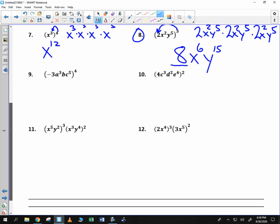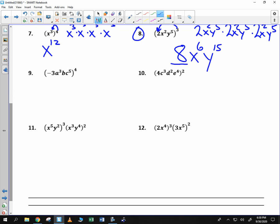So let's try to do this one without writing it all out. Negative 3 to the fourth, negative 3 times negative 3 is 9, times negative 3 again is negative 27, and times negative 3 again is 81. And we can multiply our exponents. We get a to the 12th, b to the fourth, c to the 20th.